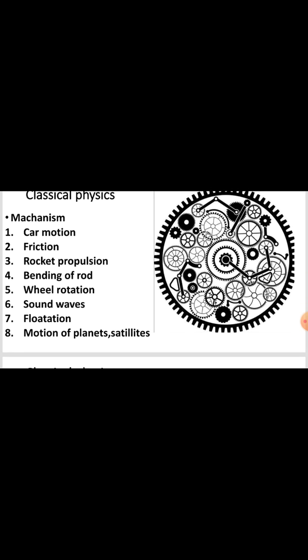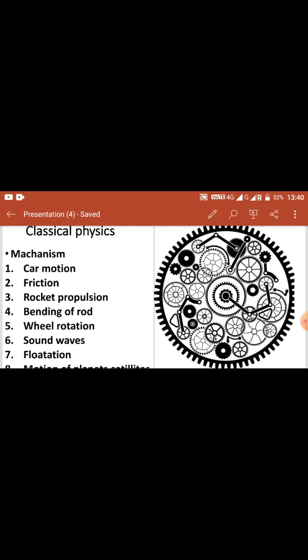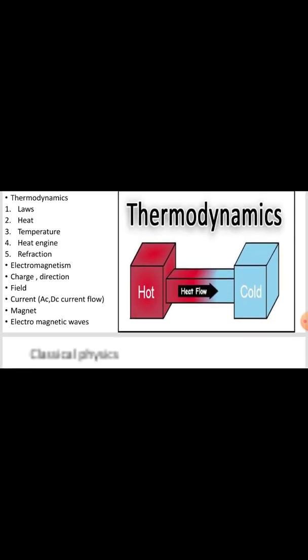Classical physics covers four varieties. First is mechanics — cars, floating objects, motion of planets, satellites — all of these are mechanisms. Second, classical physics includes thermodynamics. Thermodynamics is about heat, temperature, and heat engines.